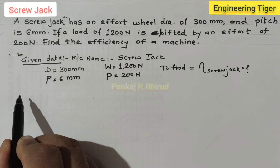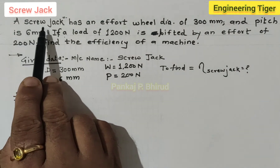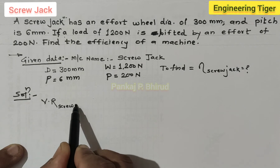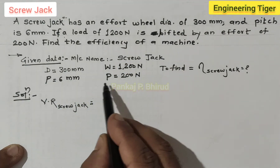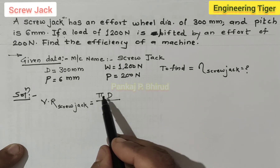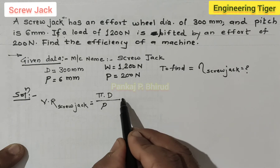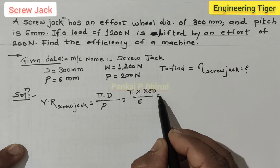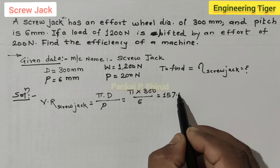Now let us solve the example. First we will calculate the velocity ratio of the screw jack. The formula is: since effort wheel diameter is given, the circumference of the wheel is π×D. If the length of handle were given, we would use 2πL. Distance covered by the load is the pitch. So VR equals π×300 divided by 6, giving VR equals 157.07.